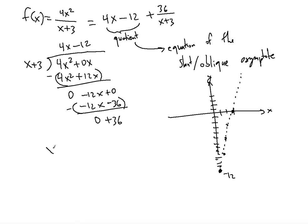So the vertical asymptote is found when you set the denominator equal to 0, so x is equal to negative 3. So x is equal to negative 3 is a vertical asymptote, that's the equation.